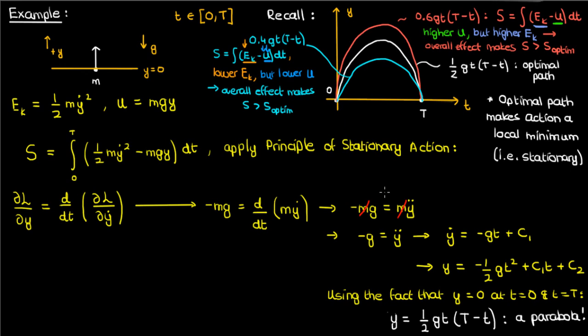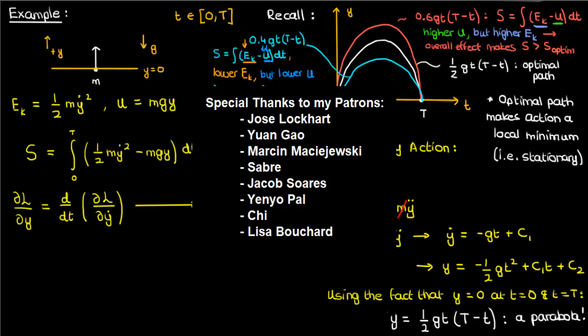That does it for this video. In the next lesson I'll talk about some ways we can extend the principle of stationary action to more complex systems that are now constrained, unlike the unconstrained systems we spoke about here. I'll finish off by thanking the following patrons for supporting me at the $5 level or higher — I've linked my Patreon account in the description. If you enjoyed the video feel free to like and subscribe. This is the Faculty of Khan, signing off.